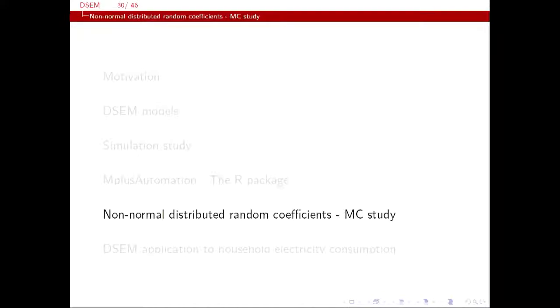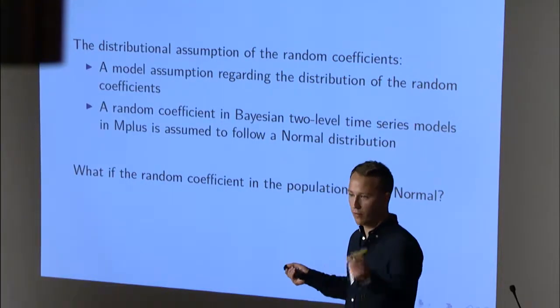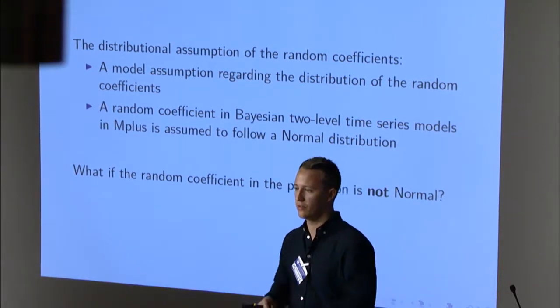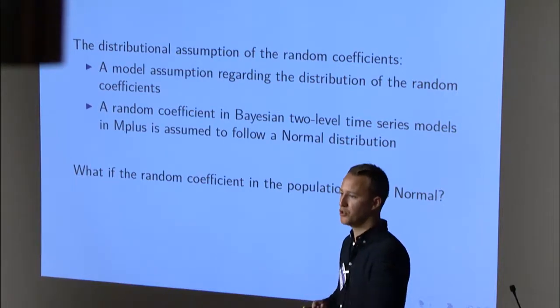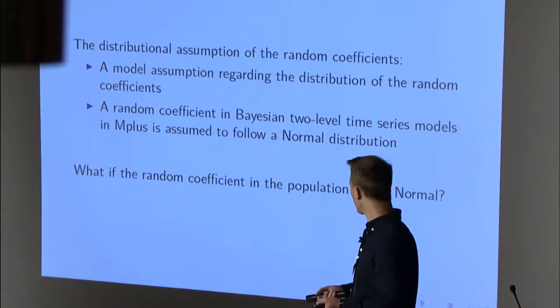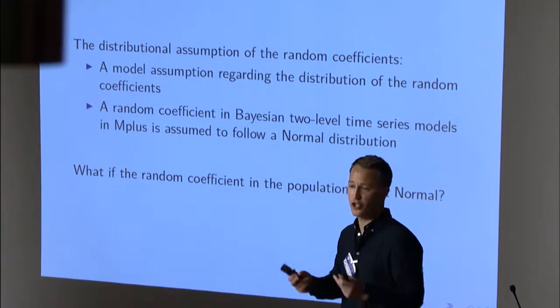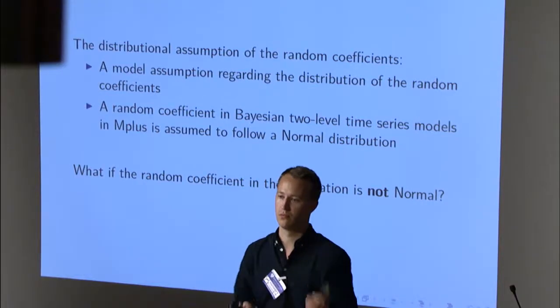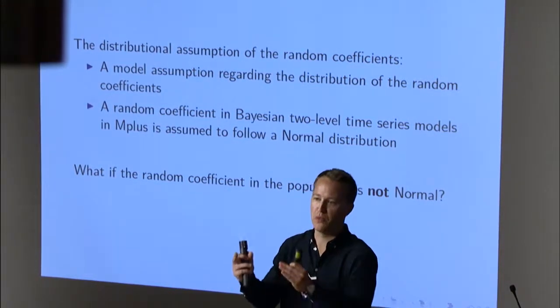Now let's discuss non-normally distributed random coefficients. The DSEM model assumes random coefficients follow a normal distribution — but what if the true population distribution is bimodal or skewed? For example, if there are two unobserved groups like males and females with different AR coefficients and we haven't measured the grouping variable, the population distribution would be a mixture of two normals. Will the model force normality, or will the data overrule the assumption?